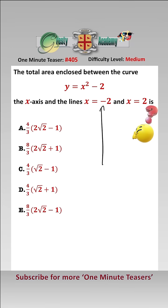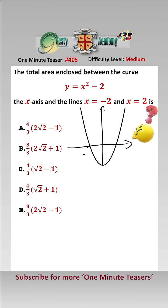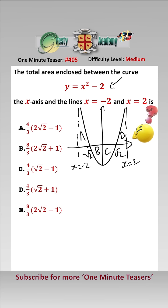It's often worth drawing a quick graph to see where we are here. So here is our quadratic, looking something along the lines of that. This is the point minus root 2 and this is the point root 2, because x squared minus 2 is 0 at those two points. Here is the line x equals minus 2 and here is the line x equals 2. So that gives us four regions: A, B, C and D.